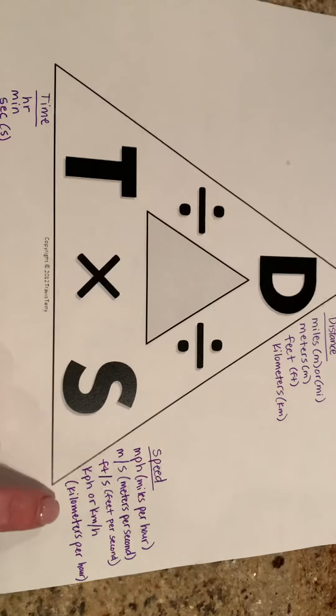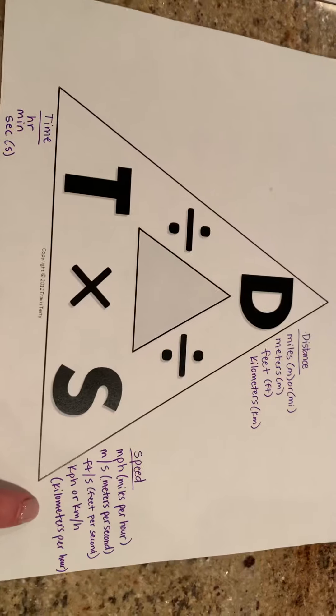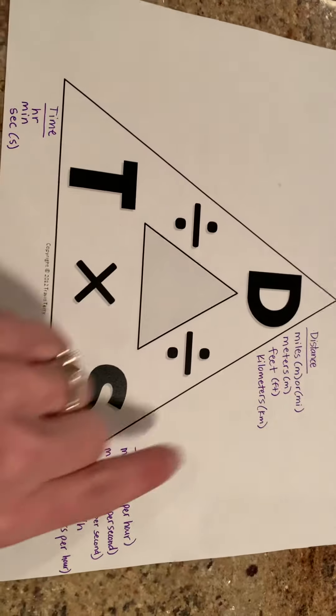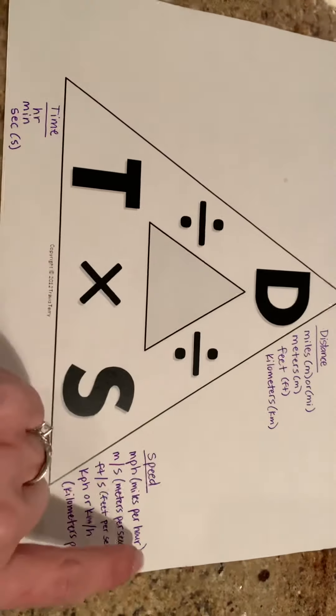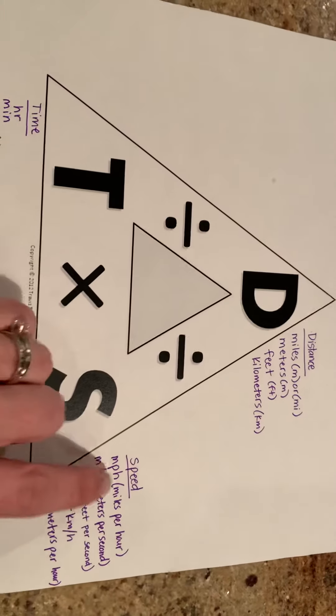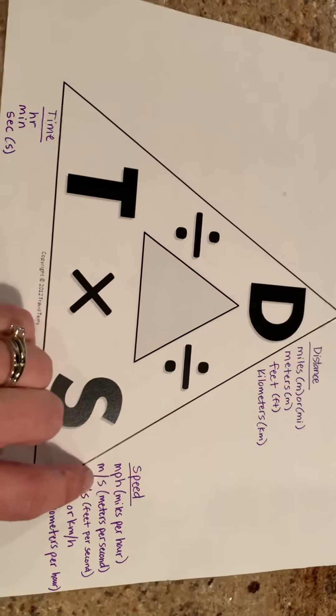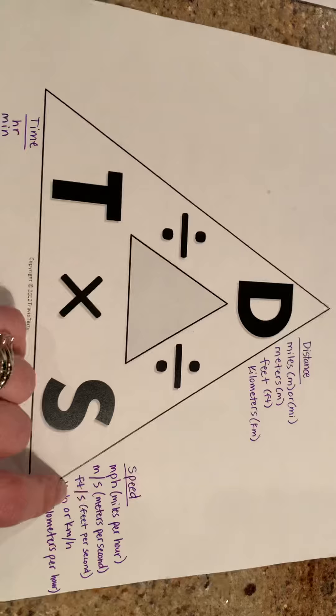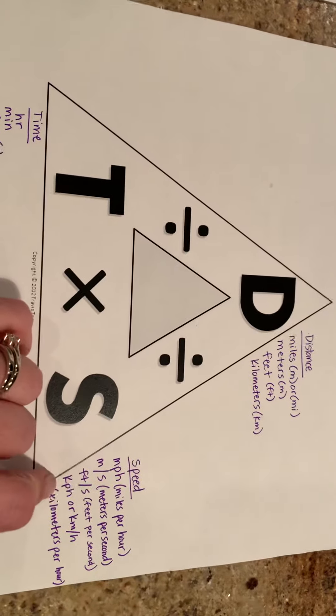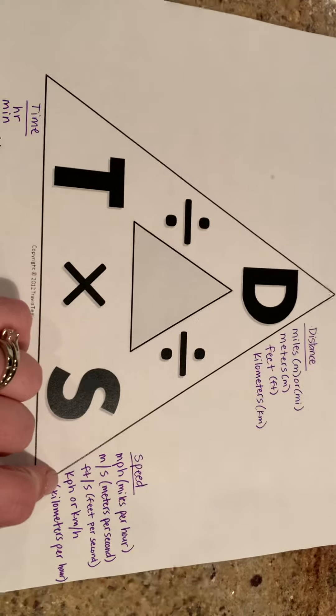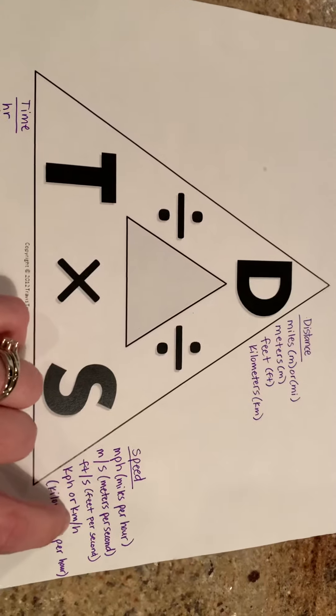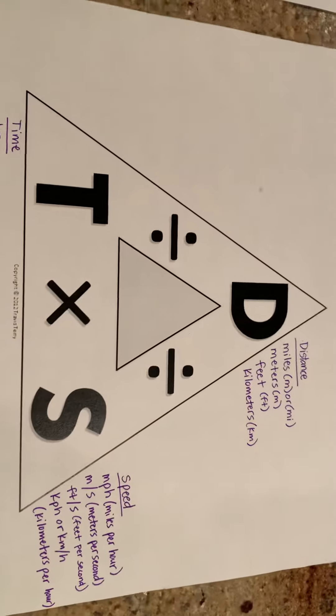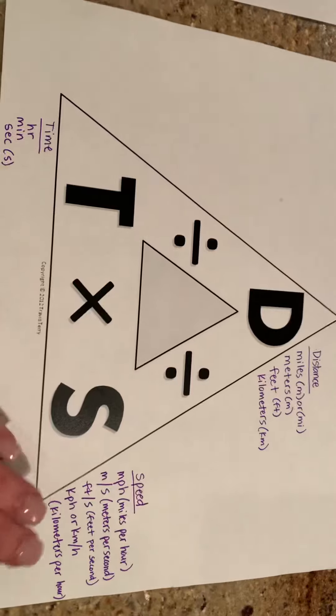Now here's speed. If you'll notice, speed has a little more going on there because speed includes distance and your time units. See, you have miles and hours, meters and seconds, feet and seconds, and kilometers and hours. Now kilometers per hour can be written either like this or like this. You'll see it either way. But this kind of makes sense if you think about it.